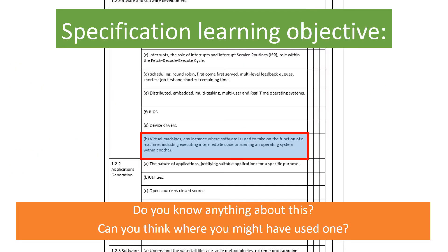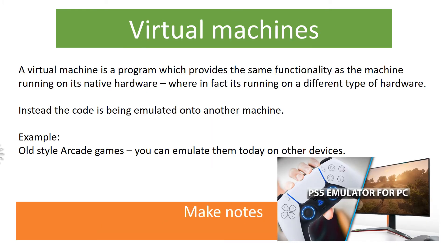So today we're looking at virtual machines — what they are, their functions and examples of them. A virtual machine is basically a program that emulates the function of another computer or another machine on its own hardware.